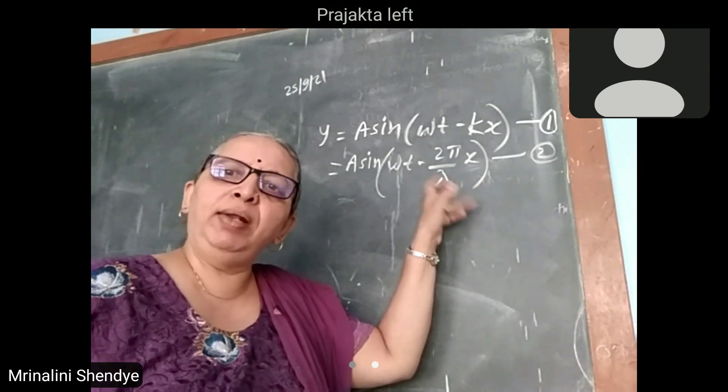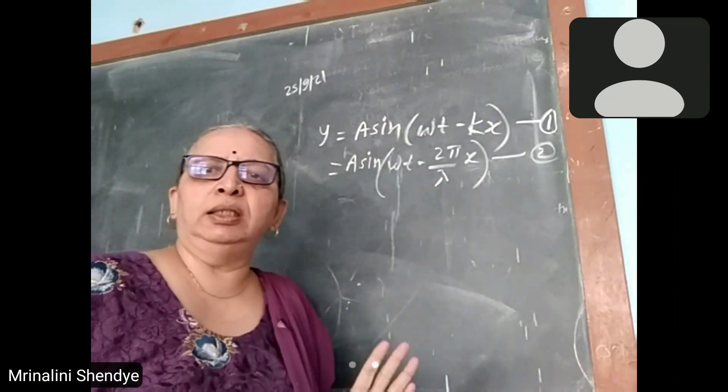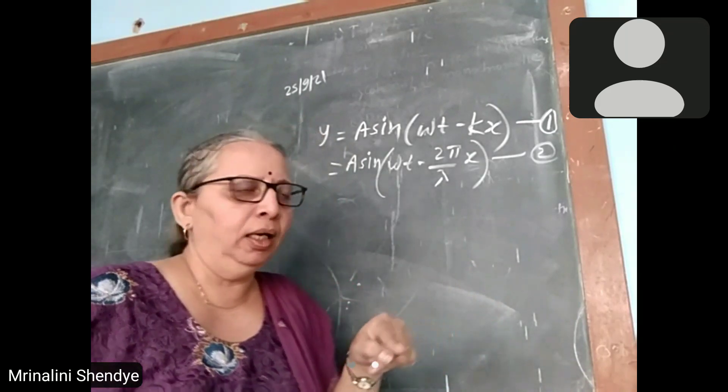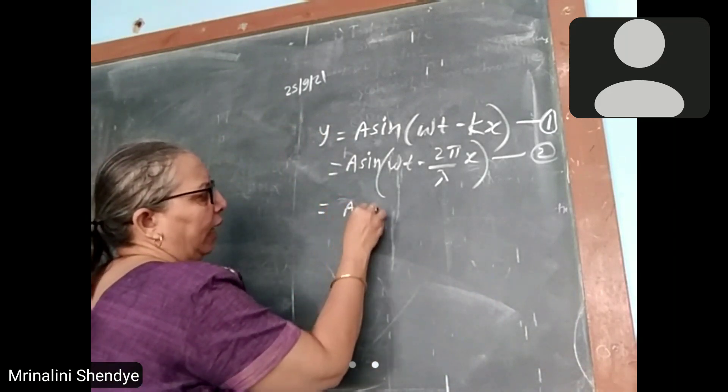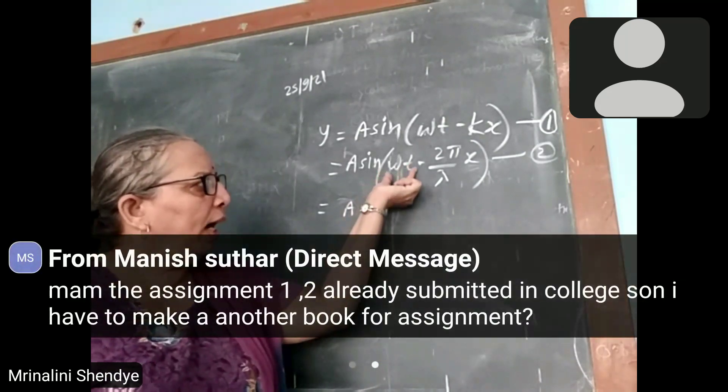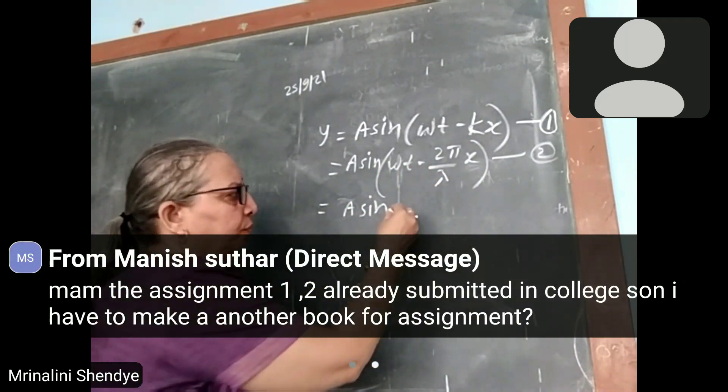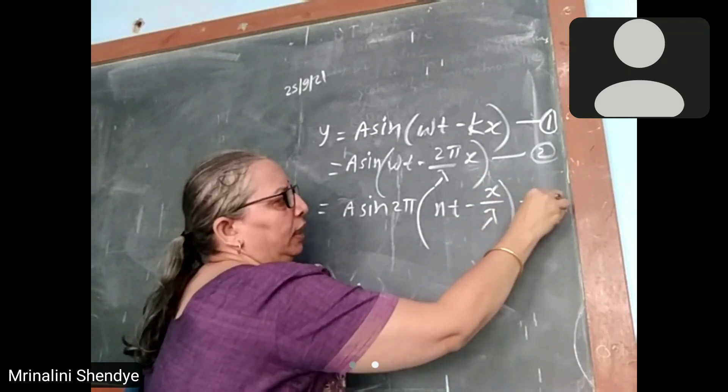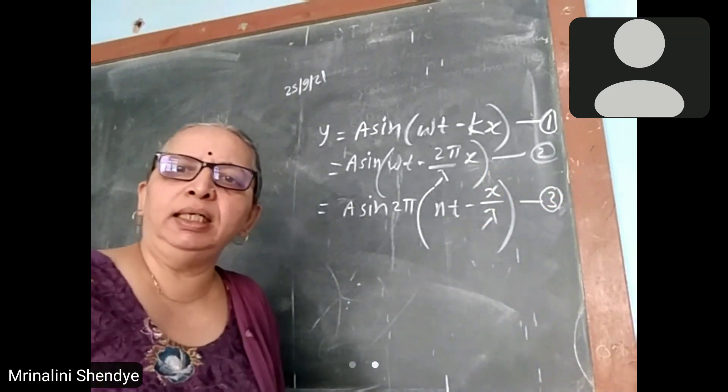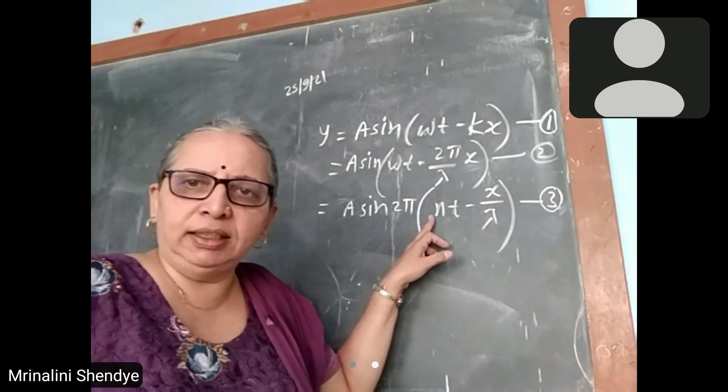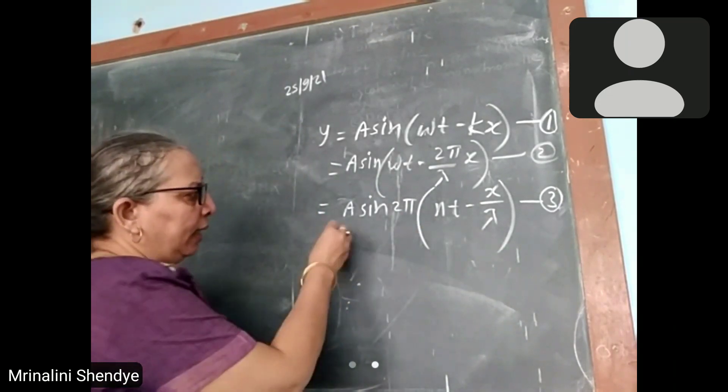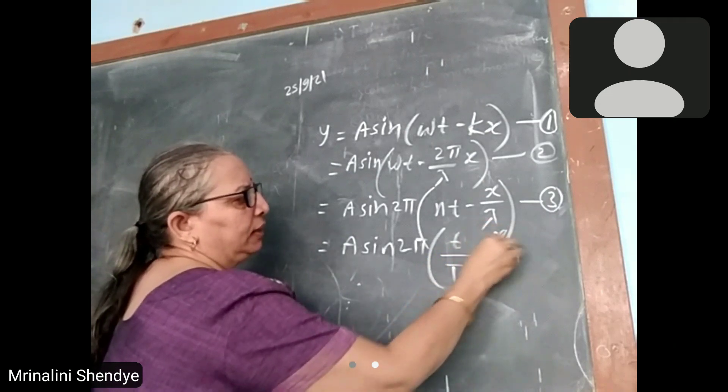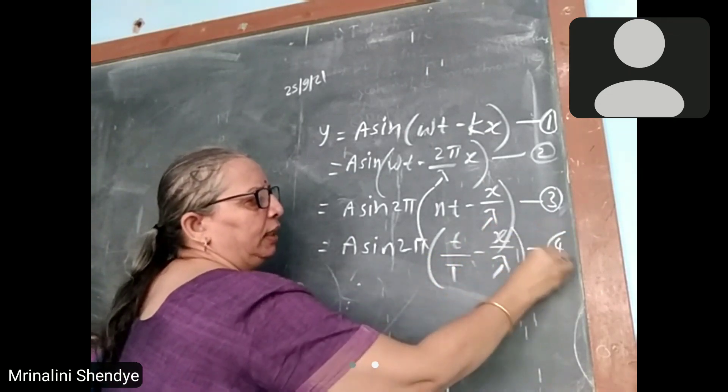We also know omega as 2 pi into frequency n. So I could write the same as a sin 2 pi, 2 pi common here, n t minus x by lambda. This is equation 3, the third form. But frequency is reciprocal of periodic time, so I could write the same as a sin 2 pi, t upon capital T minus x upon lambda. This is equation 4.